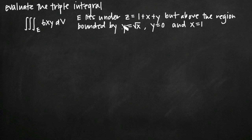We need to find limits of integration for x, y, and z. We need to choose our order of integration — whether we're going to integrate first with respect to x, then y, then z, or z, then y, then x, or some other order of integration.